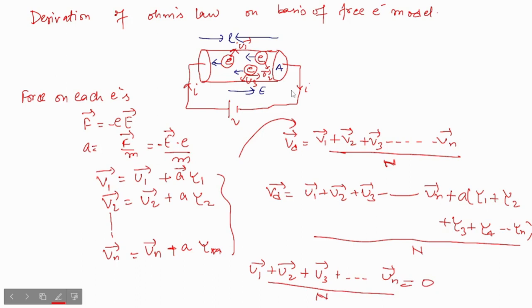Here vector U1 plus vector U2 plus vector U3 up to vector Un upon n will be zero. Why so? Because U1, U2, U3 and so on, they are random velocities, so their vector sum will be zero.